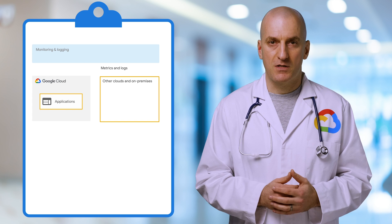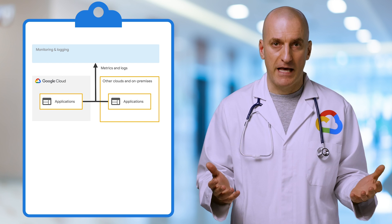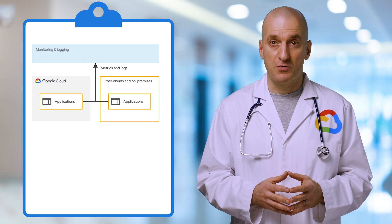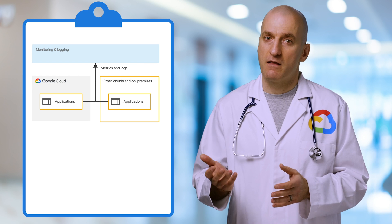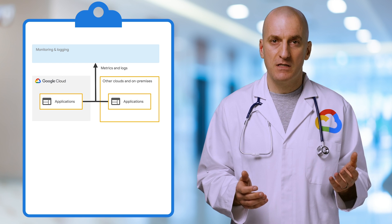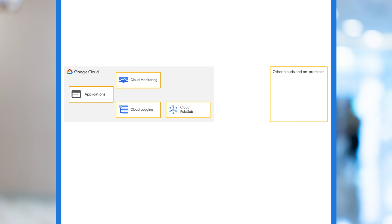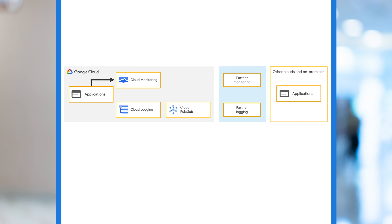Generally speaking, you have two options. The first is to use Google Cloud as the single pane of glass and send your observability data from other platforms there. There are well-documented integration options for this, and I'll get into those shortly. Your second option is to use a third-party service as your single pane of glass and have it consume observability data that's either collected by Cloud Monitoring and Logging or emitted directly by your Google Cloud resources.